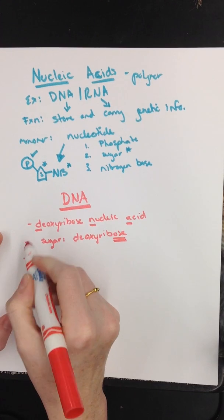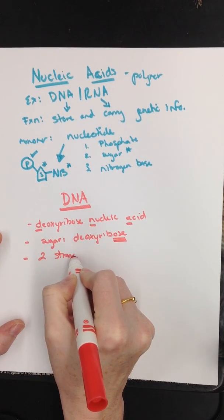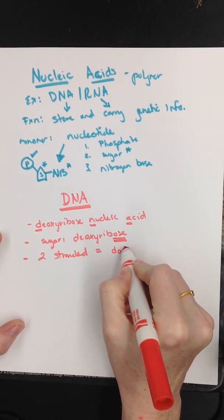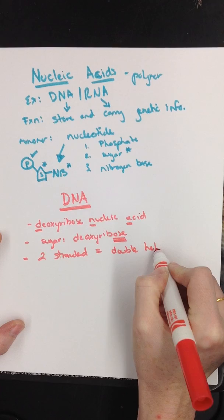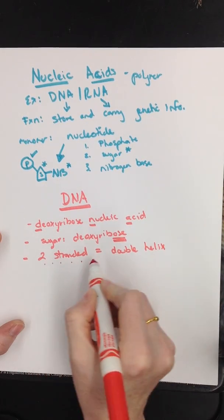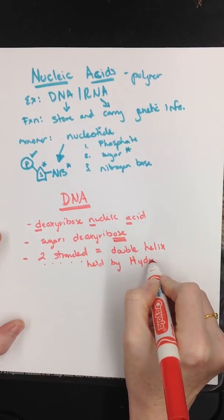Let's do structure. Remember, DNA, this is a two-stranded molecule. And because it's two-stranded, it gets to take a special shape. That's that double helix. And these two strands are held by a hydrogen bond.